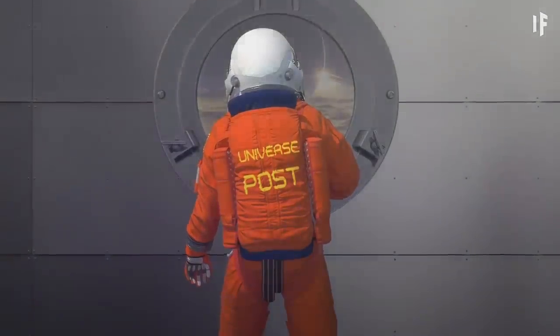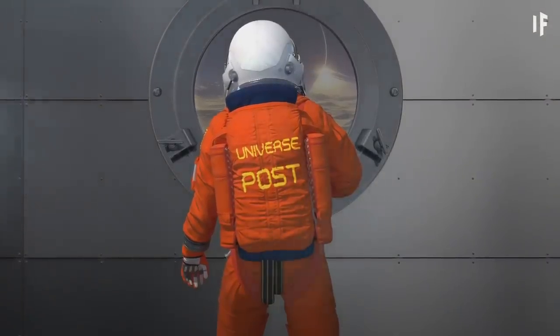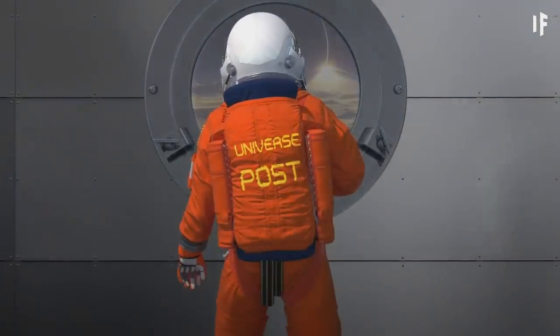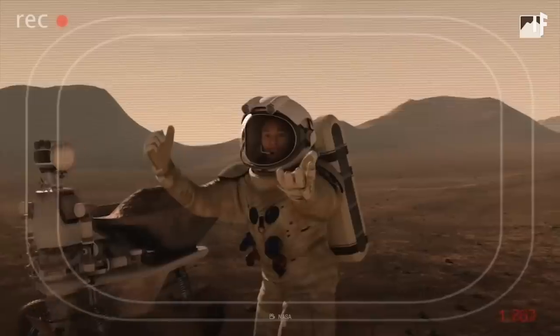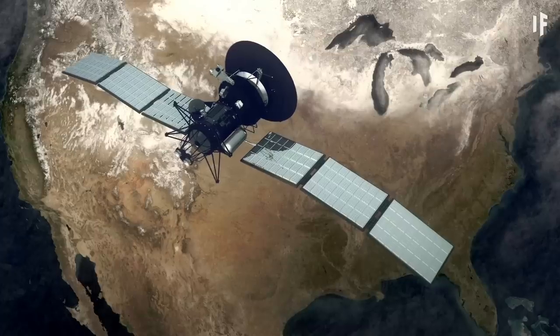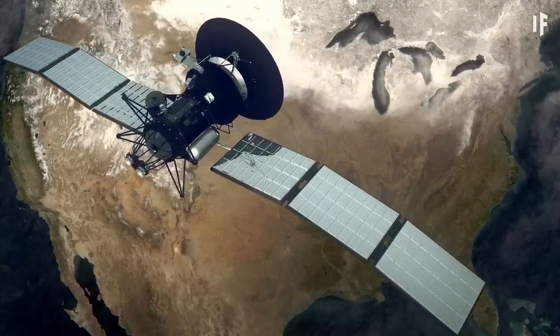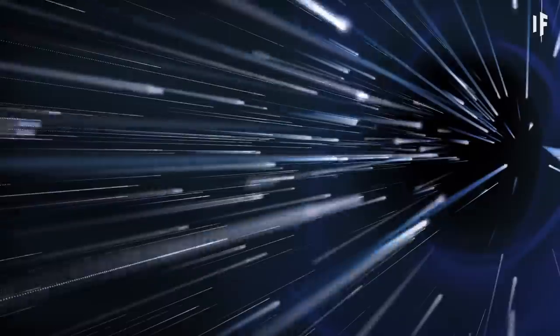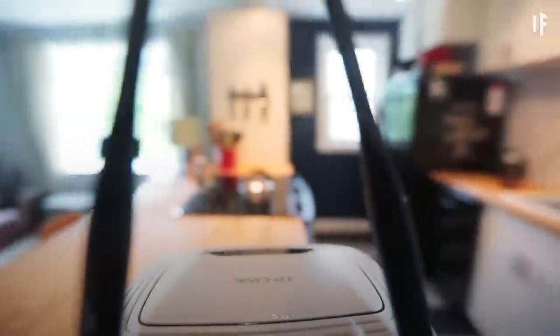Because the most reliable way to communicate might be through the mail. Surprised? Well, our satellites rely on radio waves to transmit information. Even though these waves travel just as fast as light, they lose their strength over long distances. It's like being too far away from your Wi-Fi router.